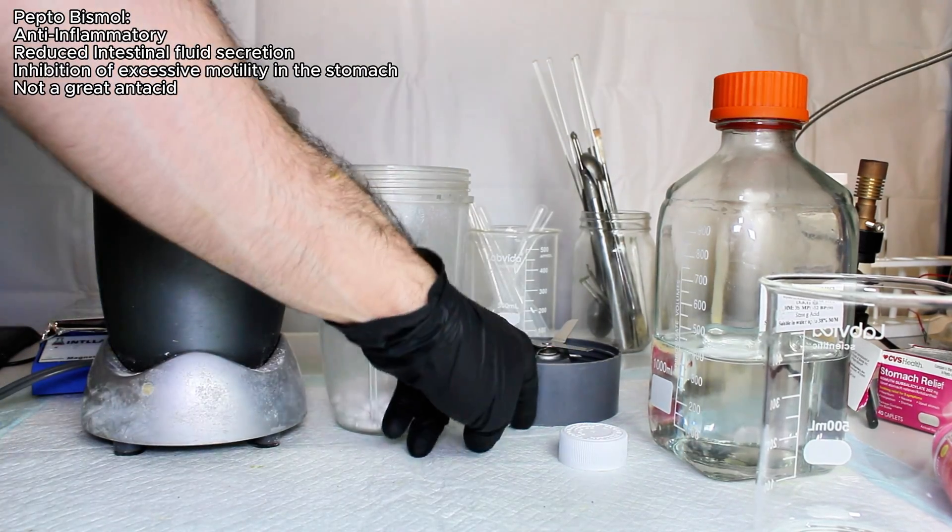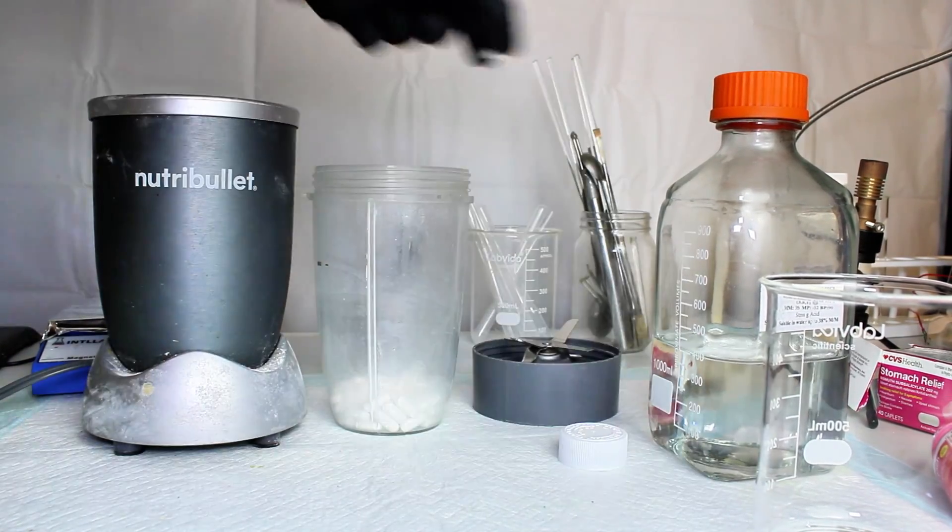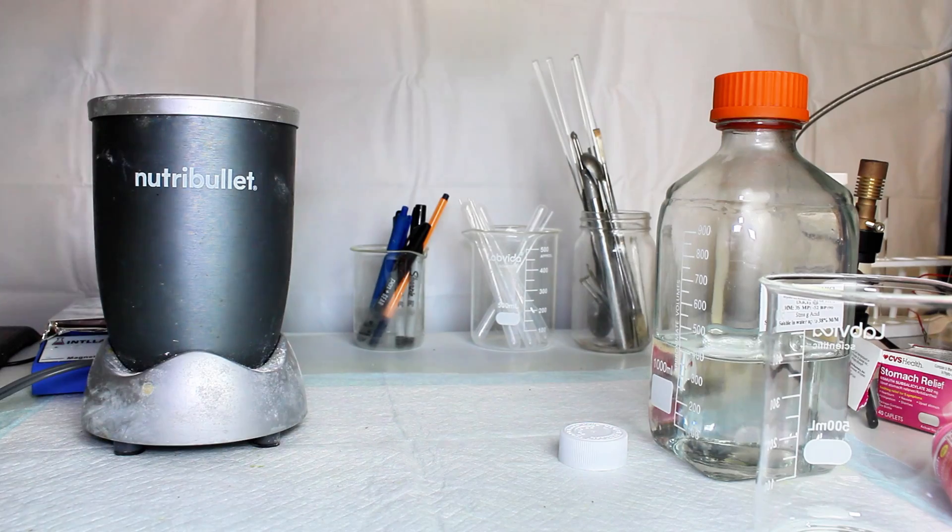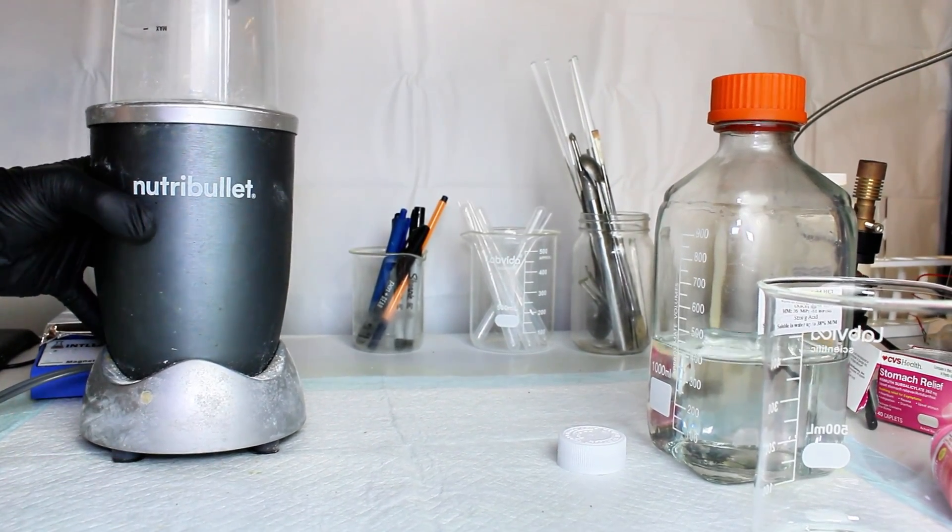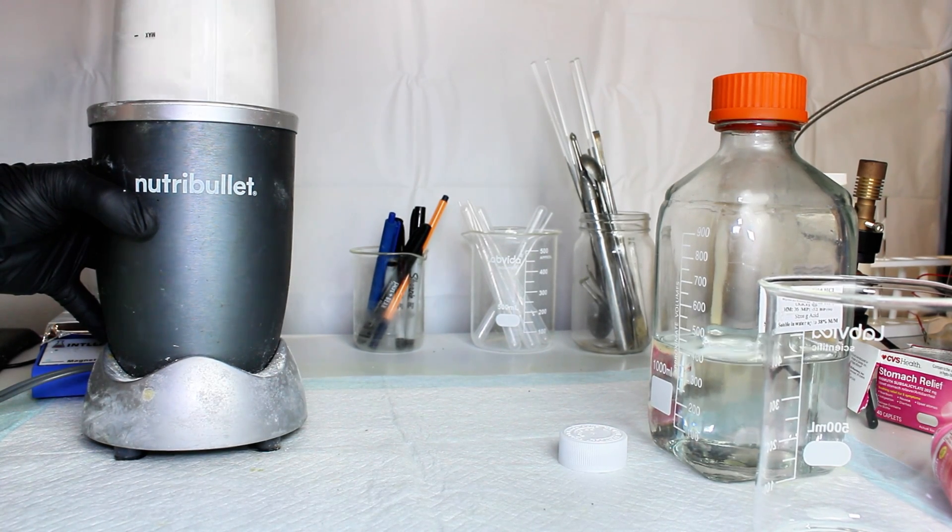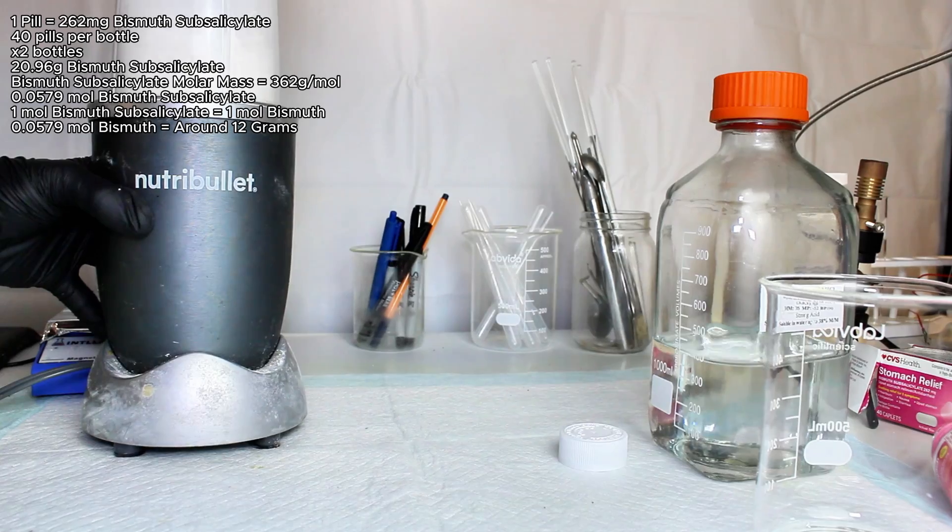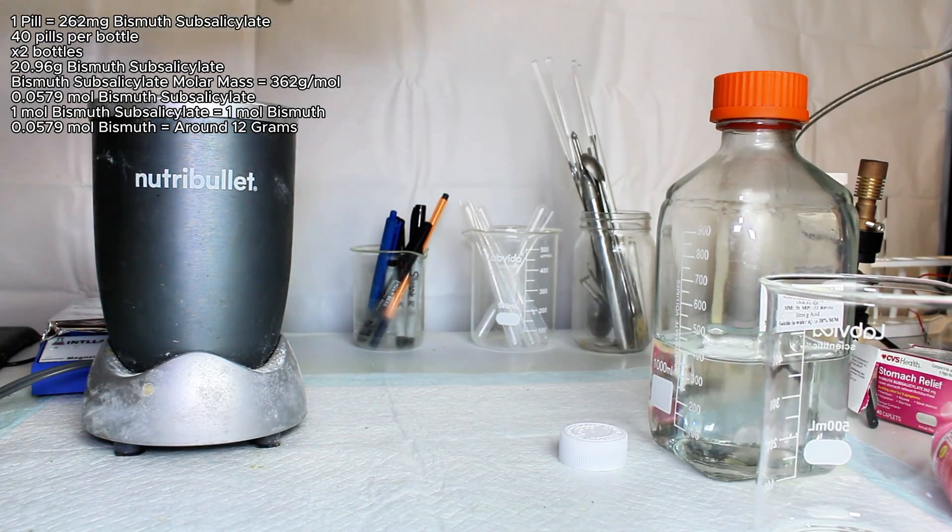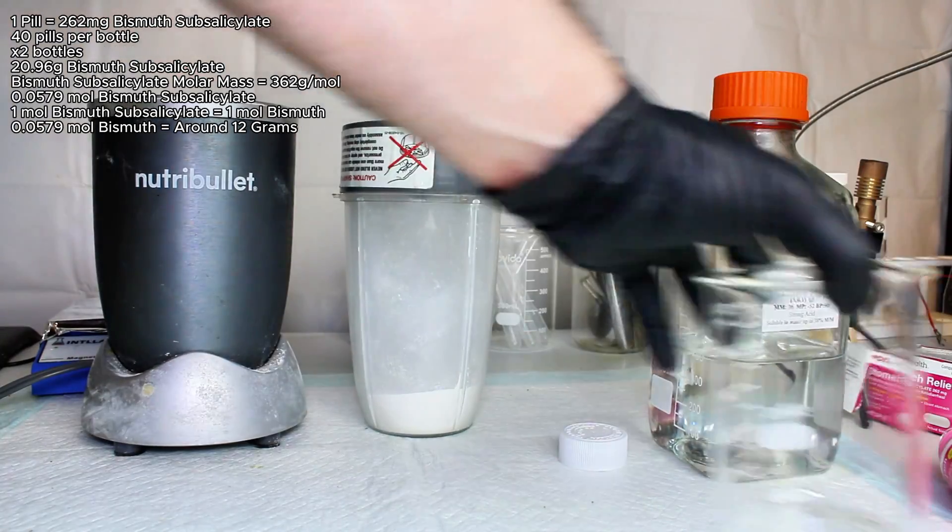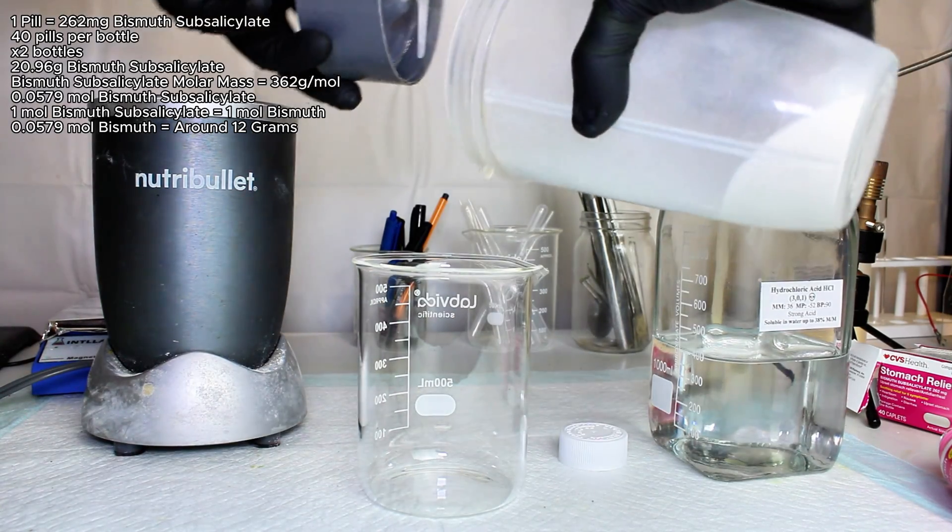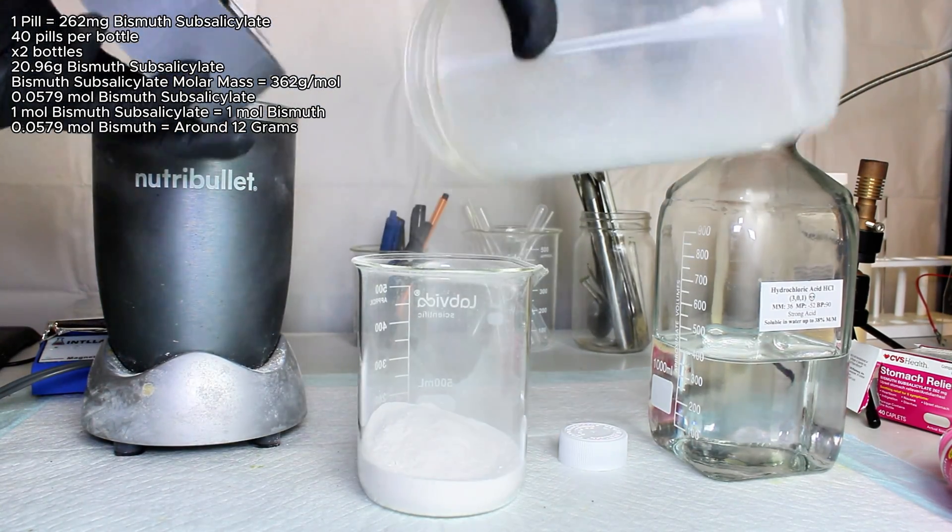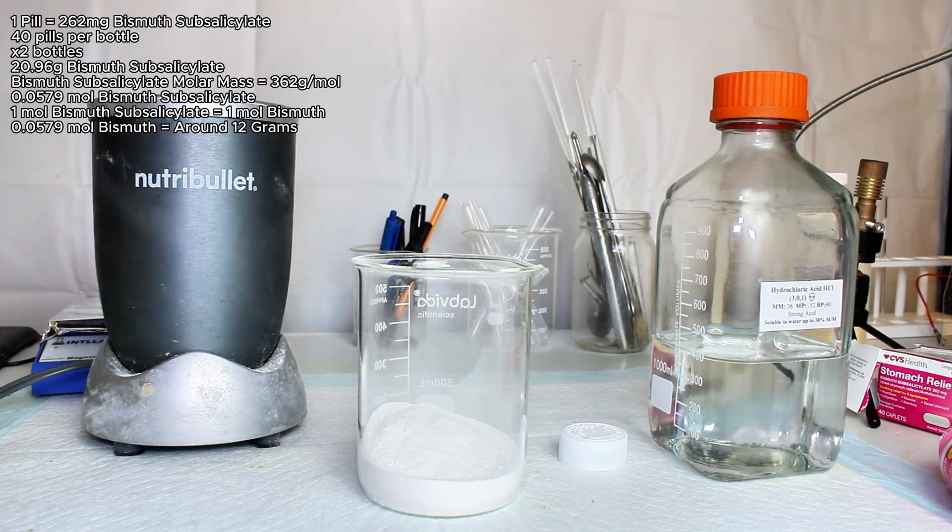What I find interesting is that this medication actually contains a significant amount of bismuth, which can be isolated fairly easily, particularly from the pill form. Each pill contains 262 mg of bismuth subsalicylate, which corresponds to 151.3 mg of elemental bismuth. Since there are 40 pills in each bottle, I should technically be able to extract around 12 grams from the two bottles I have here.